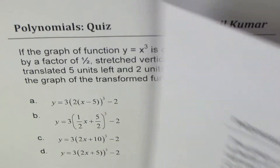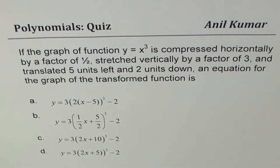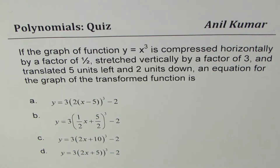Here is the third and last question from this set on transformations multiple choice. If the graph of function y equals x cube is compressed horizontally by a factor of half, stretched vertically by a factor of three, and translated five units left and two units down, an equation for the graph of the transformed function is one of four given equations. Make the correct selection. I hope you got these answers — now it's time to check them.